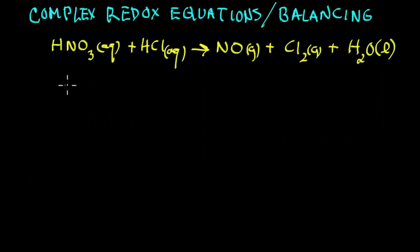In this session we are going to balance a complex redox equation. Complex means it's more difficult to balance when you have an element on more than one place in either side of the equation. We have this in both oxygen and hydrogen.